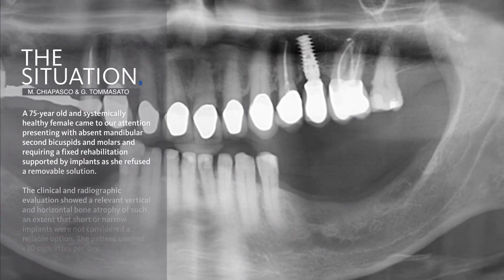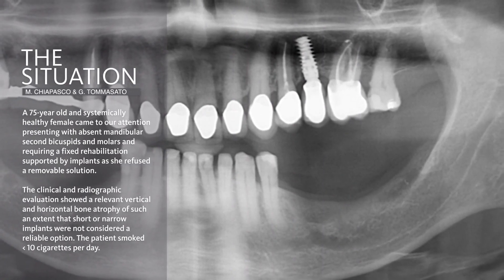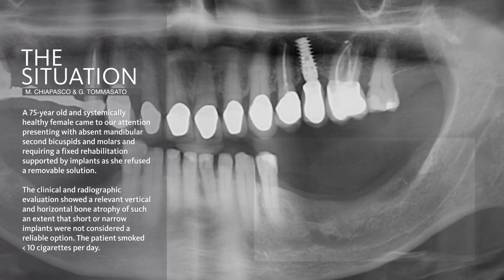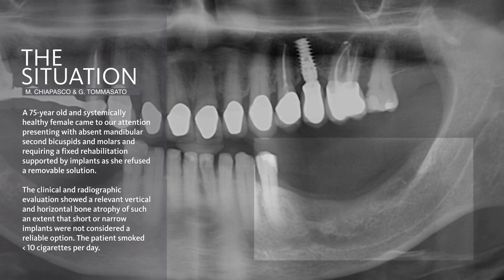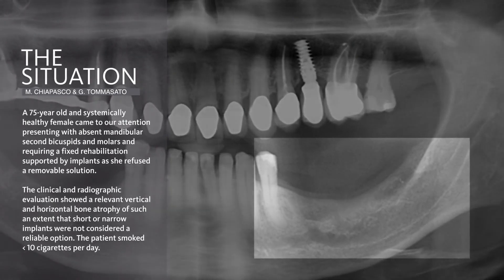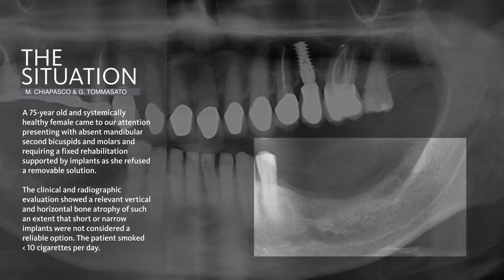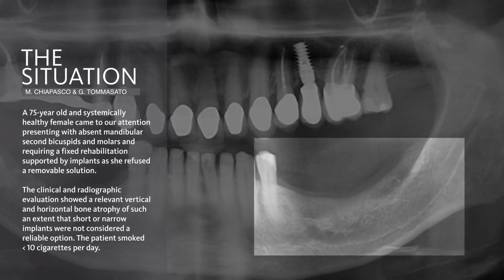This patient is affected by long-standing edentulism of both the right and left mandible. Here you can see on the left side severe vertical resorption of the bone, which is associated also to horizontal bone resorption.